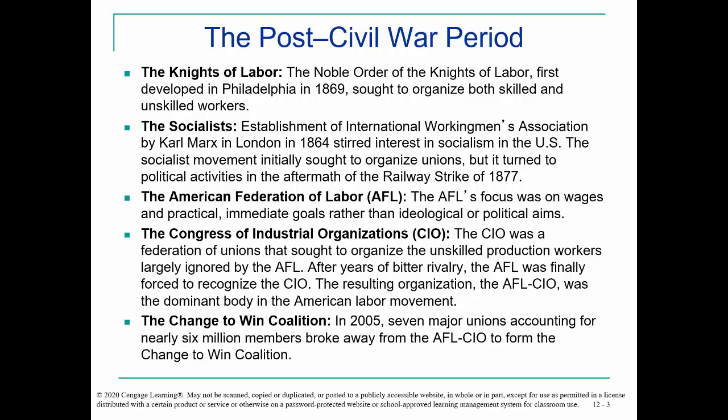Initially it sought to organize unions and became political after the railway strike in the 1870s. The big organization to this day in this country is the AFL-CIO, which began as two separate organizations. The AFL, the American Federation of Labor, focused on wages and very practical, immediate goals. The CIO, the Congress of Industrial Organizations, was a federation of unions that focused on unskilled production workers — workers that were being largely ignored by the AFL. Finally the two organizations came together as the dominant body in the American labor movement, the AFL-CIO.